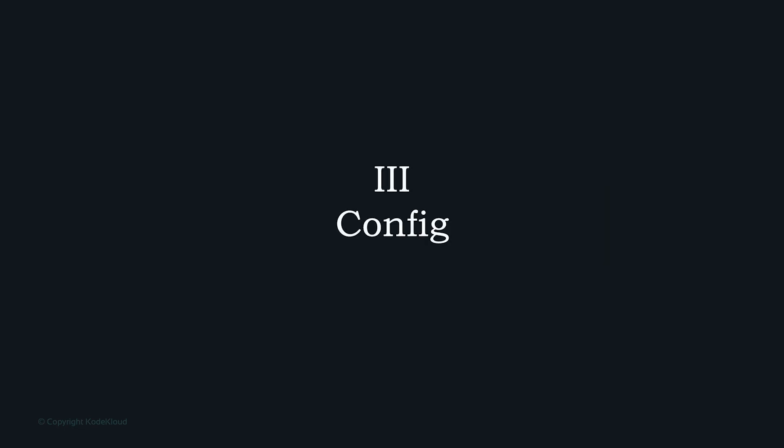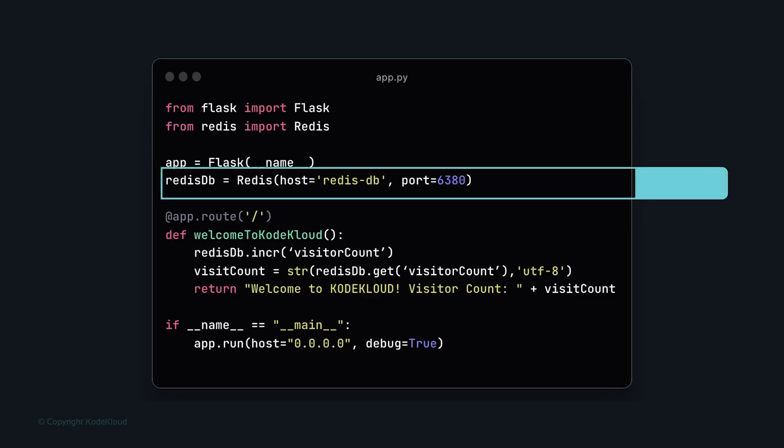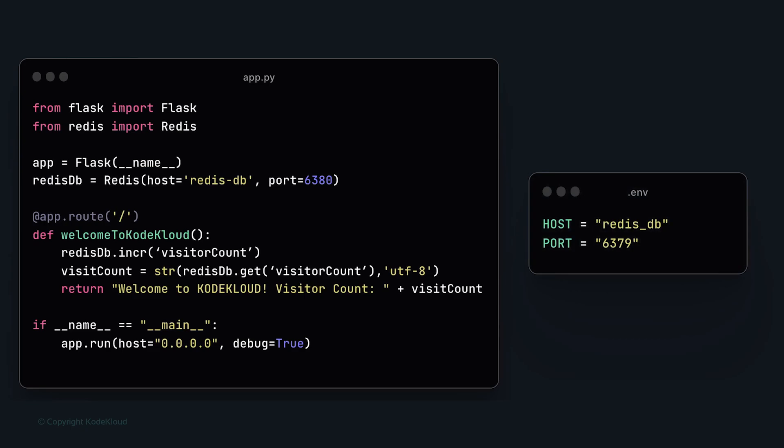The next factor is config. As you may have noticed, our Python code includes hardcoded Redis host and port values. This is a problem when deploying to different environments — dev, staging, production — as each may use a different Redis instance requiring changes to those values. This is not best practice and can lead to inconsistencies. To keep environment configurations separate from application code, we define a separate `.env` file.